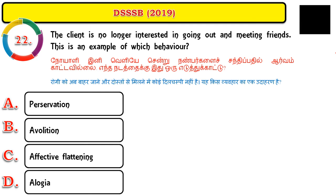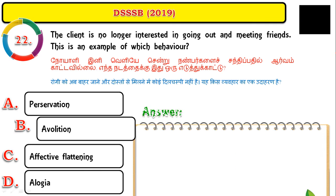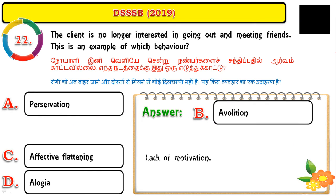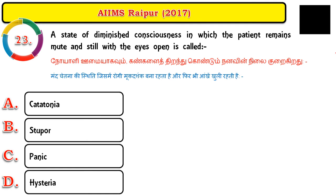Question number twenty-two: the client is no longer interested in going out and meeting friends. This is an example of avolition — a lack of motivation, which is one of the negative symptoms mainly seen in schizophrenia clients.